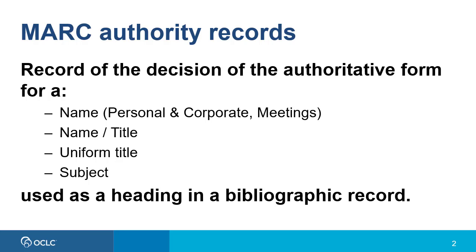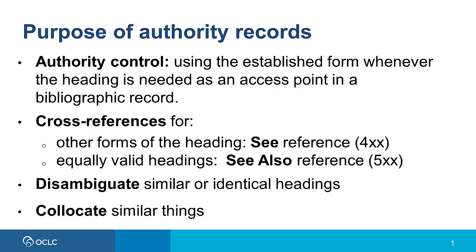A subject heading may be a single term, phrase, or a group of terms. Let's briefly review the purpose of authority records. First, authority records help maintain consistency through authority control — that is, using the established form of a heading whenever the heading is needed as an access point in a bibliographic record.